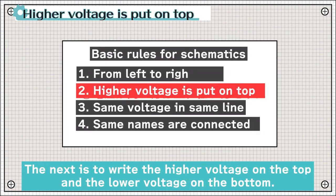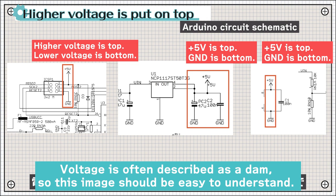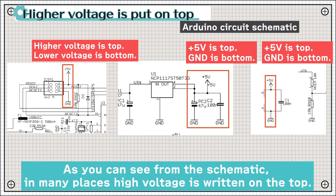The next is to write the higher voltage on the top and the lower voltage on the bottom. Voltage is often described as a dam, so this image should be easy to understand. As you can see from the schematic, in many places, high voltage is written on the top.